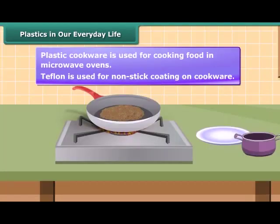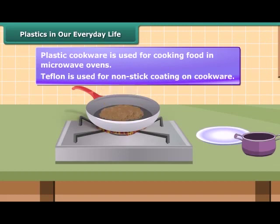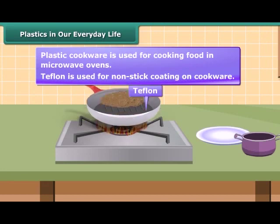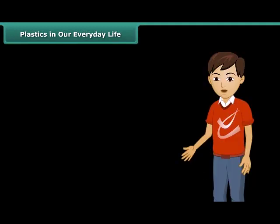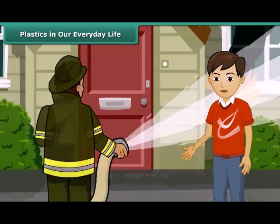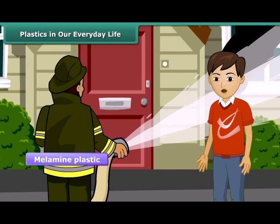Have you ever noticed the frying pan for cooking? You would have seen a black coating on it. It is teflon, which is a special plastic on which oil and water do not stick. Thus it is used as non-stick coating on cookware. There are also fireproof plastics — the uniforms of firemen have a coating of melamine plastic to make them flame resistant.